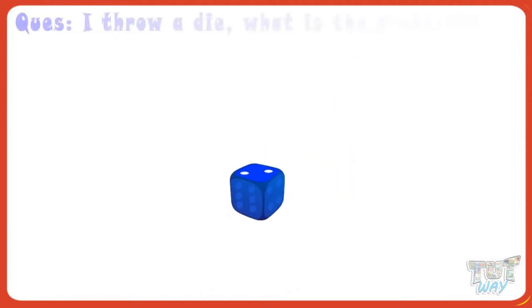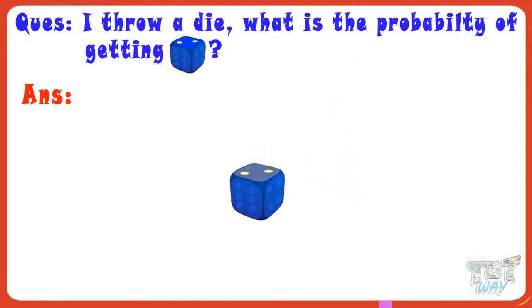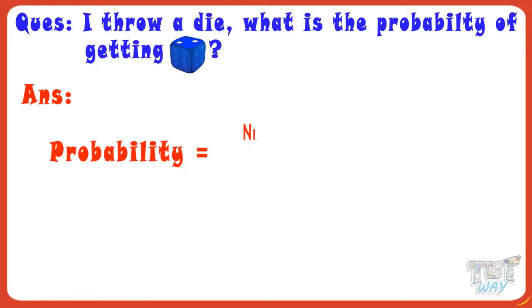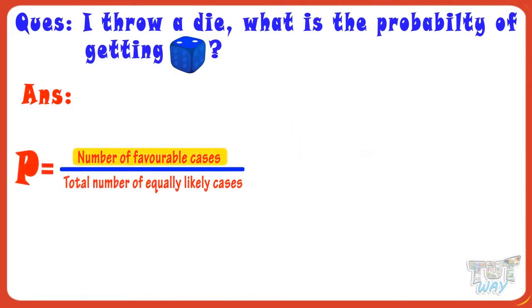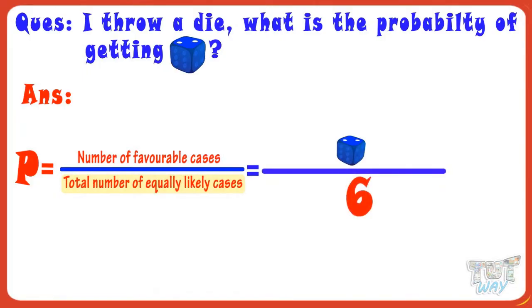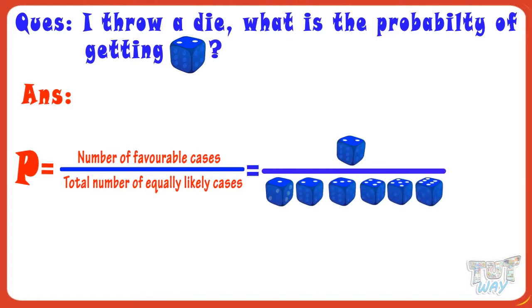Example. If I toss a dice, what is the probability of getting 2? We know probability is number of favorable cases divided by total number of equally likely cases. And the number of favorable cases here is 1, that is, getting 2 on the dice. And the total number of cases are 6. We know 6 cases are there at most possible in a dice, that is, numbers 1 to 6. So, probability is 1 by 6.